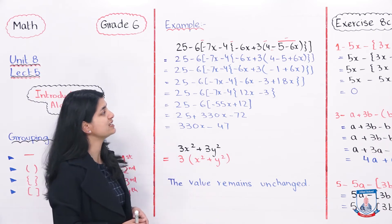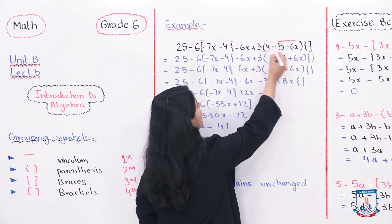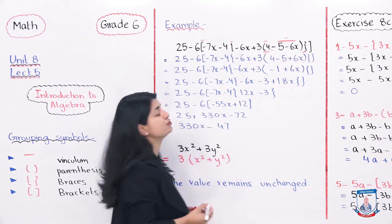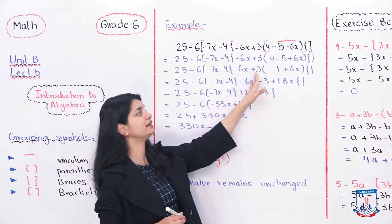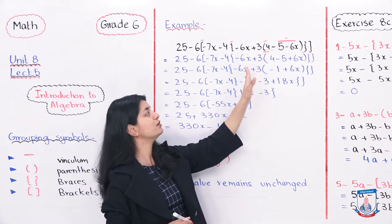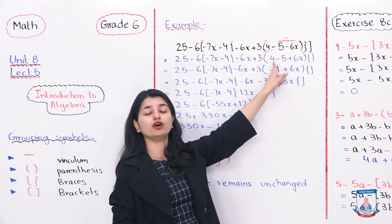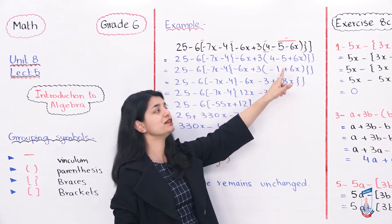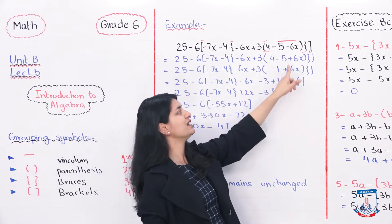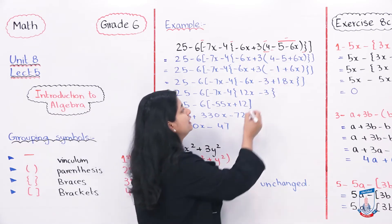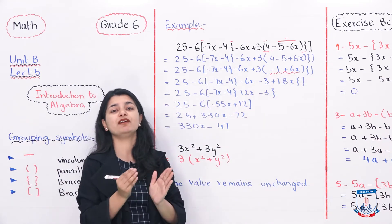Now our concern is to simplify the parentheses. The rest of the question is copied as it is. Plus 3 will not change. Then we look inside the parentheses: 4 minus 5 — 4 is smaller and minus 5 is bigger, so you will have minus 1. Plus 6x comes down as it is. Now the inside of the parentheses is completely simplified to minus 1 plus 6x.